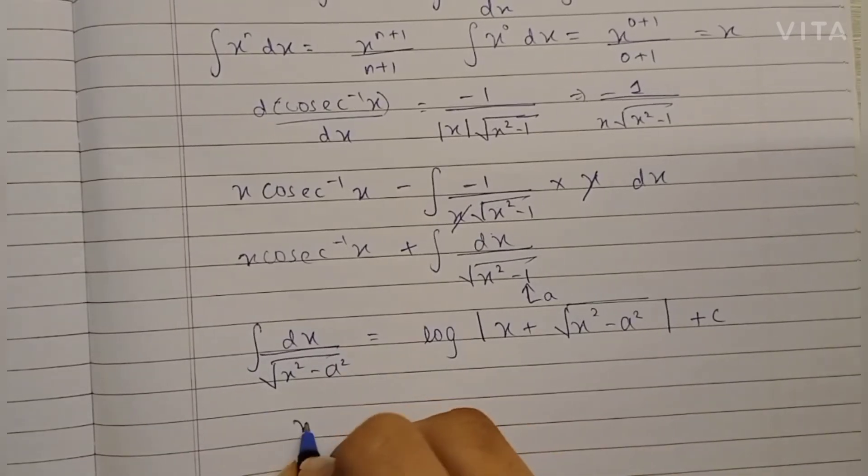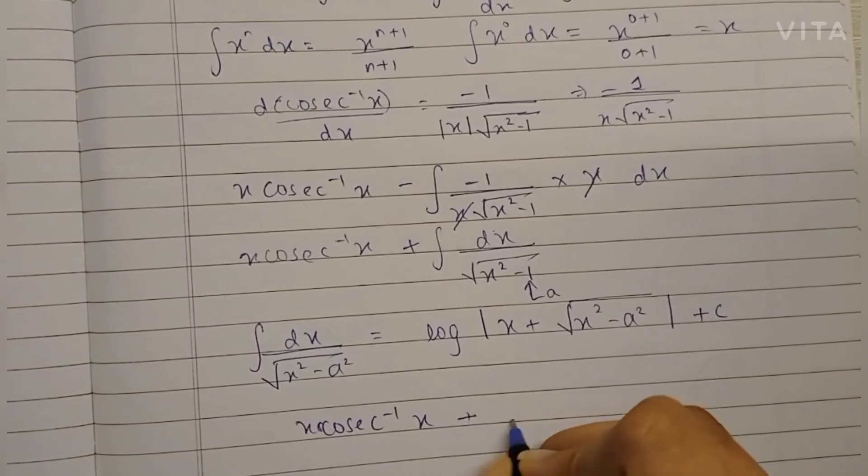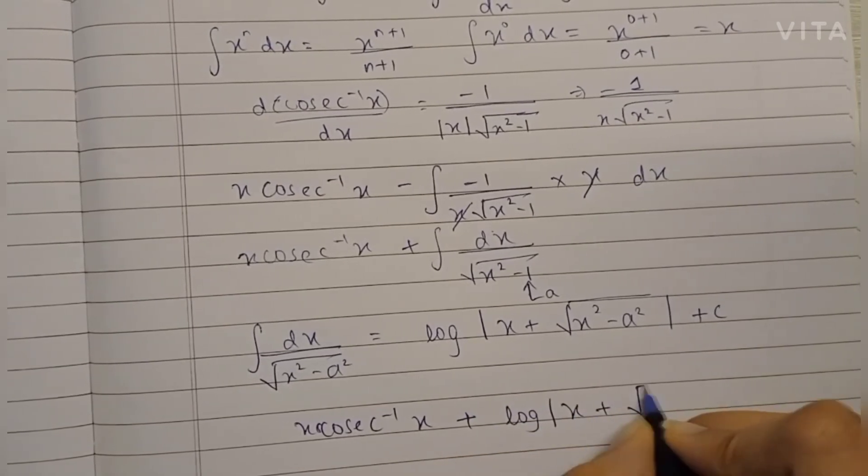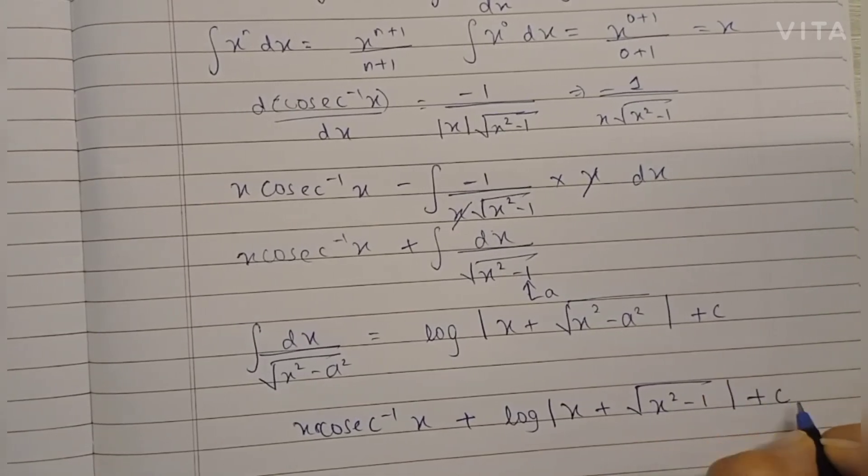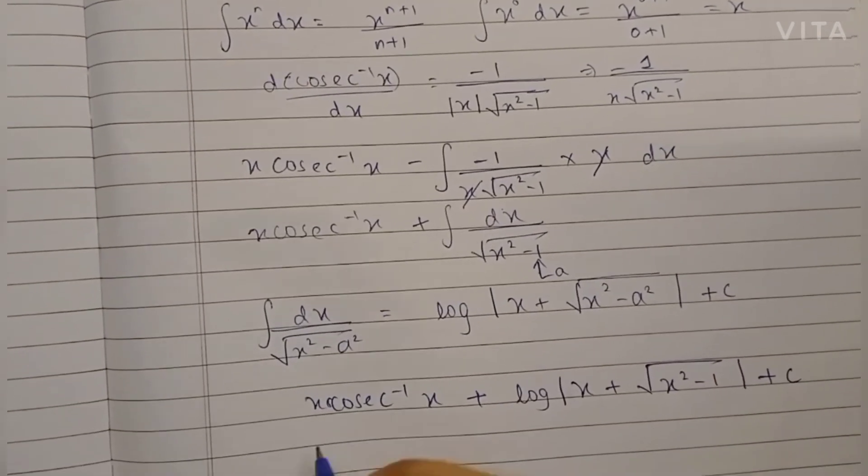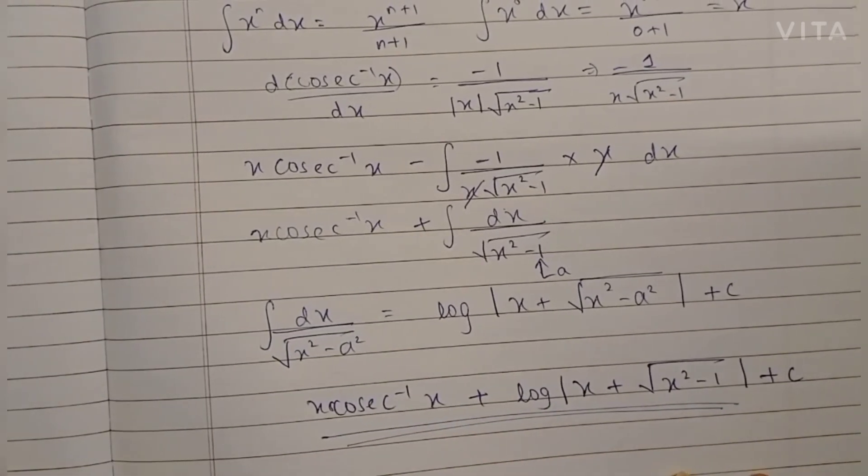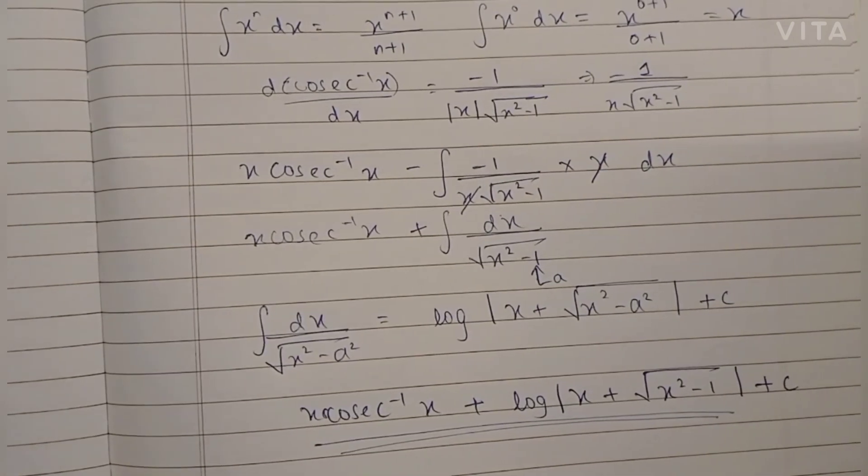So now we can write this as x·cosec⁻¹(x) + log|x + √(x² - 1)| + C, and that's the final answer as given in the textbook. So that's it for today, guys. Thank you so much for watching. I'll see you in the next video. Bye!